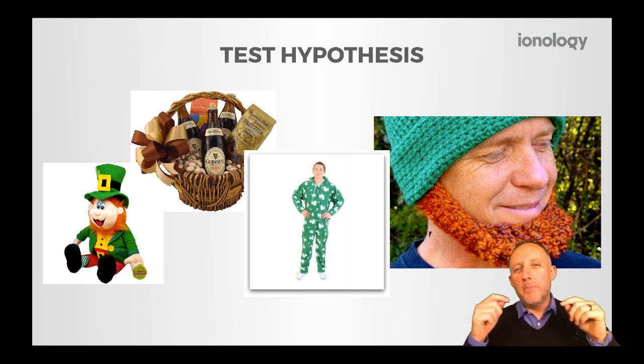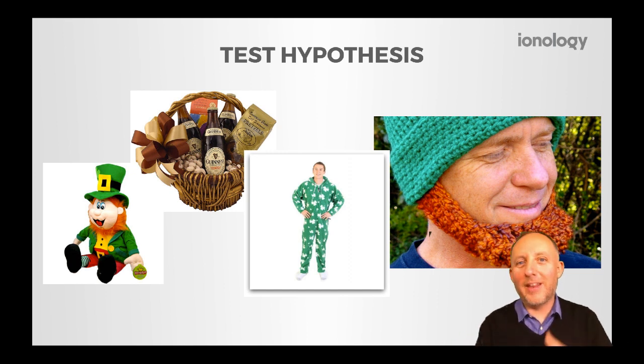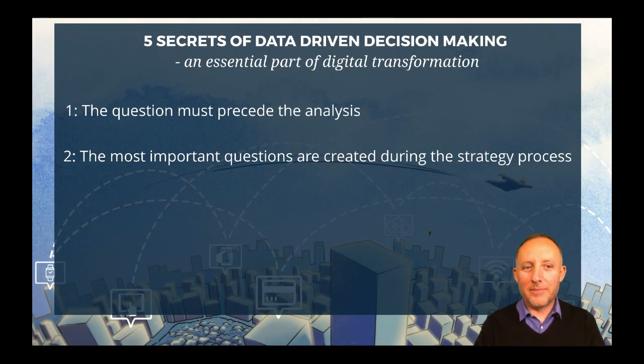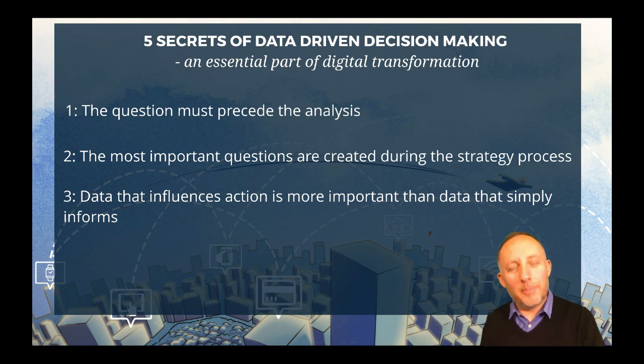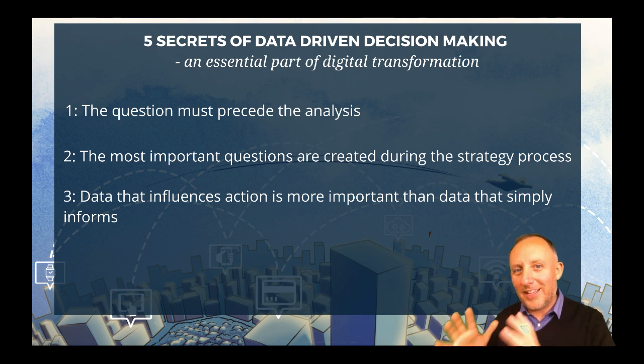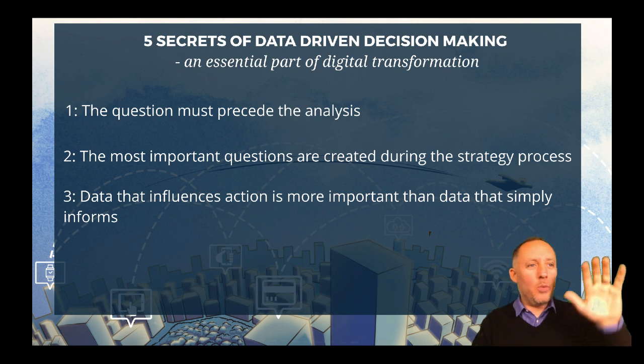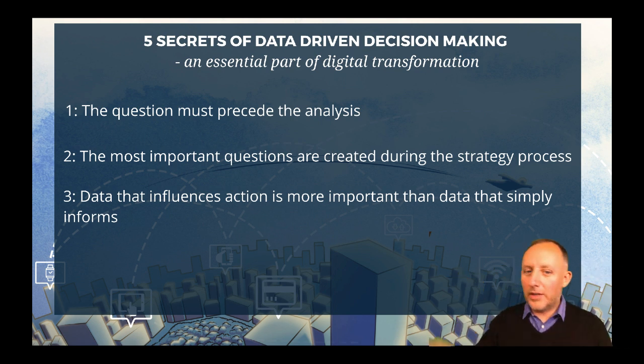So what Jamie has been able to do is, without changing his entire business structure, without creating new molds for new products, without having to turn his entire business into something that was never going to make profit, he was able to take actions from the data that came from the outcomes. And data that influences actions is much more important than data that simply informs. So if we're going to create a campaign or start to use data in our business, it's data that allows us to say we're not going to do that, we're going to do this.